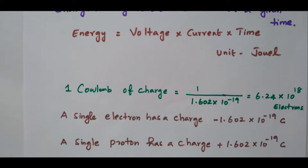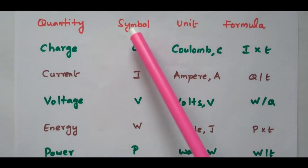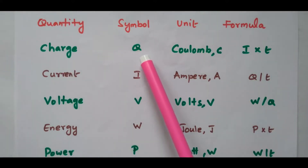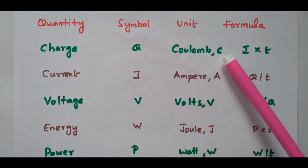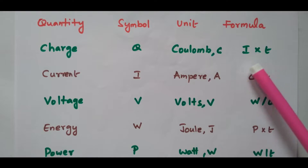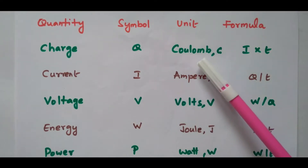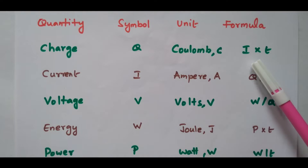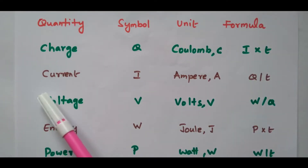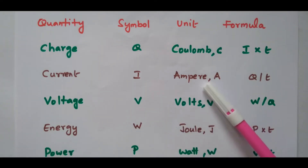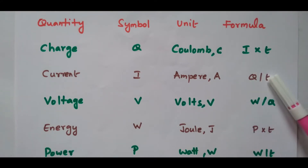We will see the electrical quantities with symbol, unit and formula. First, charge: symbol is Q, unit is coulomb written as C, and the formula is current into time, I into T. Next, current: symbol is I, unit is ampere written as A, and the formula is Q divided by T — charge divided by time.